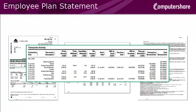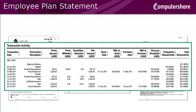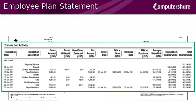The Transaction Activity section shows every transaction that occurred for the statement time period in chronological order. This section also shows you a rolling balance of the number of shares you held at any given time.